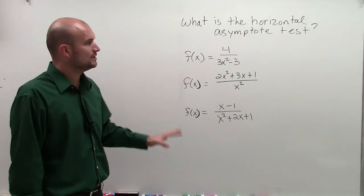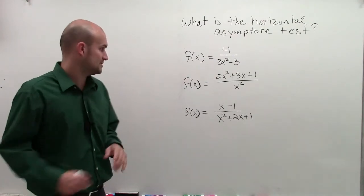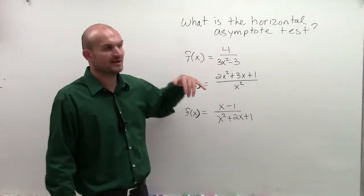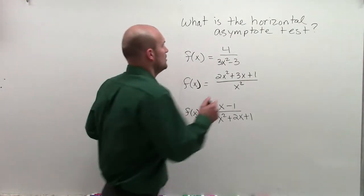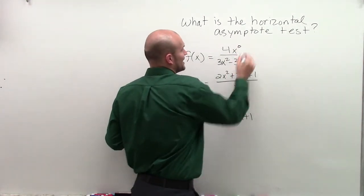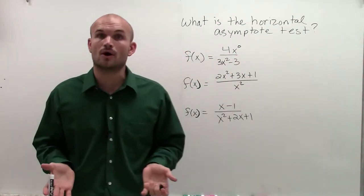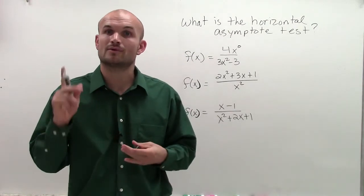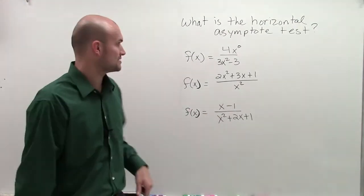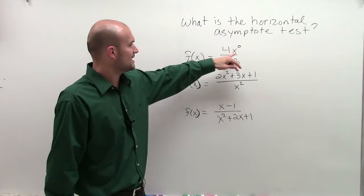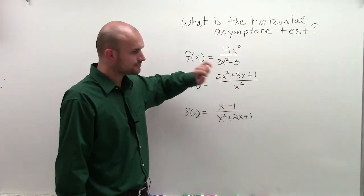So to do that, what we looked at was our leading coefficients. Now, here you might say, well, what is my leading coefficient of 4? Well, remember, I could always rewrite that as 4 times x to the 0 because x to the 0 is 1, and so 4 times 1 is 1. So now what I'm going to look at is I'm going to compare.